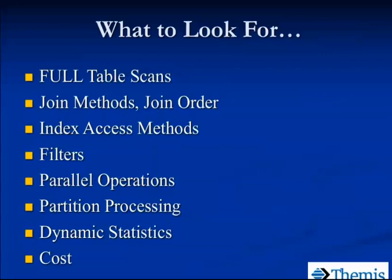Here's what we're looking for in the explain plan output. A lot of people will look for full table scans first — they're easy to find and we all understand what a full table scan is. We'll also look for join methods: did he do a nested loop, a hash join, a sort merge join? We'll look at the different index access methods — index range scan, unique scan, full scan, fast full scan, skip scan. All these things are appropriate under certain circumstances. A nested loop join isn't good in every scenario; it's good for some things, bad for others. We need to know when it's good and when it's bad.